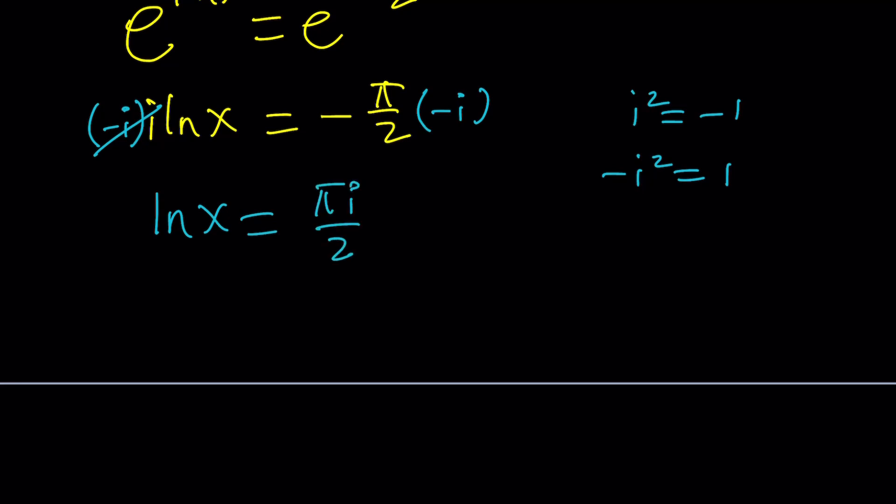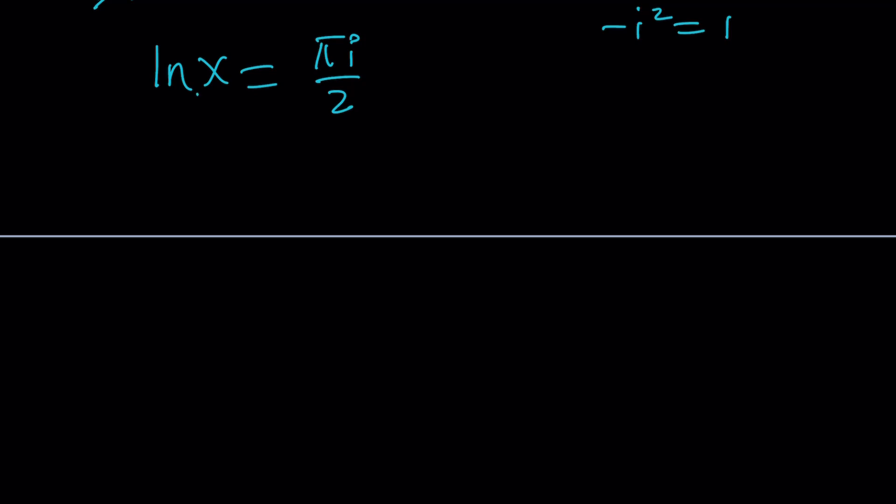Does that look familiar? If it does, let's proceed. The base is e, so from here, x becomes e^(πi/2), or I can write it as e^(iπ/2).